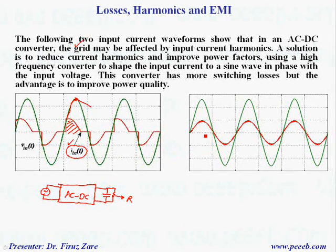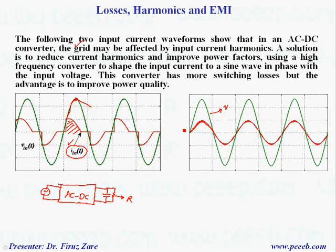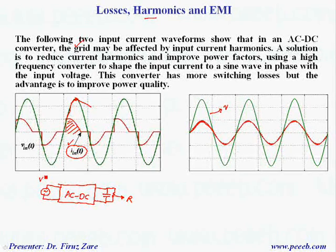Another possibility is using a power factor correction circuit, which shapes the input current into a sine wave in phase with the voltage. The advantage is improved quality and reduced harmonics. When the input is AC, it's quite important to have a better current waveform because we are not allowed to inject significant harmonics into the power system.